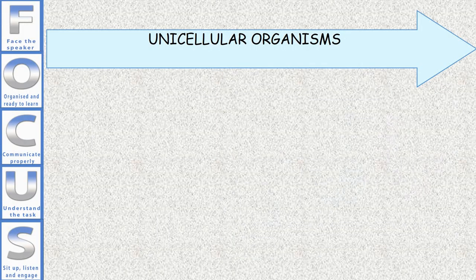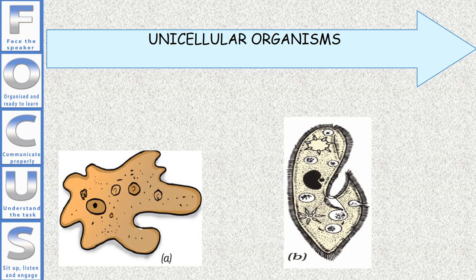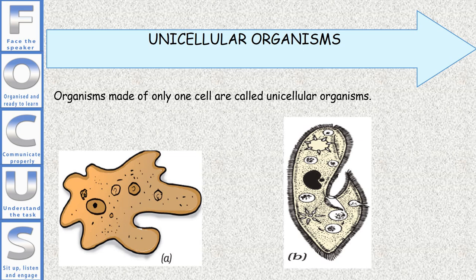Unicellular organisms. Organisms made of only one cell are called unicellular organisms.